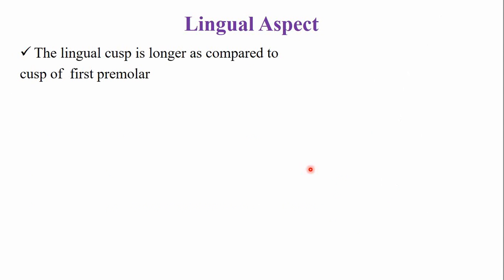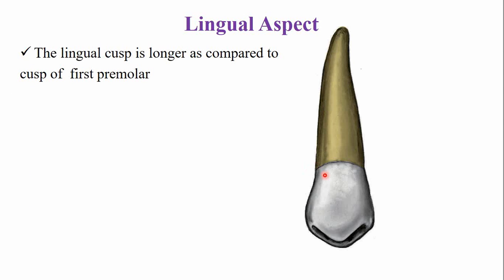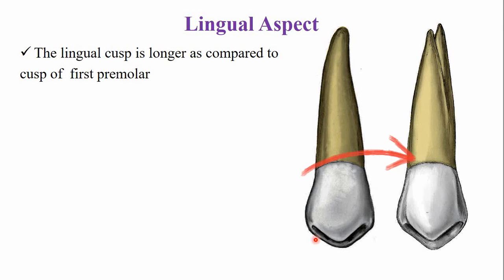From the lingual aspect, the lingual cusp of the second premolar is longer compared to the first premolar. Therefore, very little occlusal surface is visible, and only a small portion of the buccal cusp and cuspal slopes are visible from the lingual aspect. The remaining features from the lingual aspect are very similar to the first premolar.